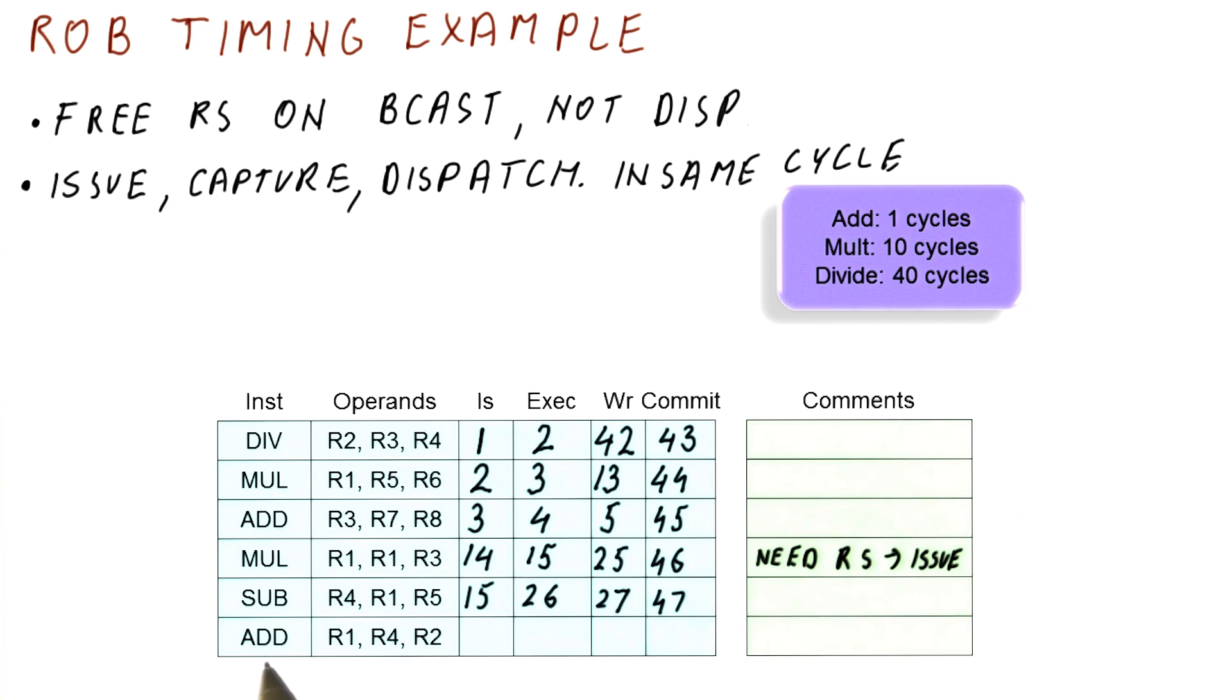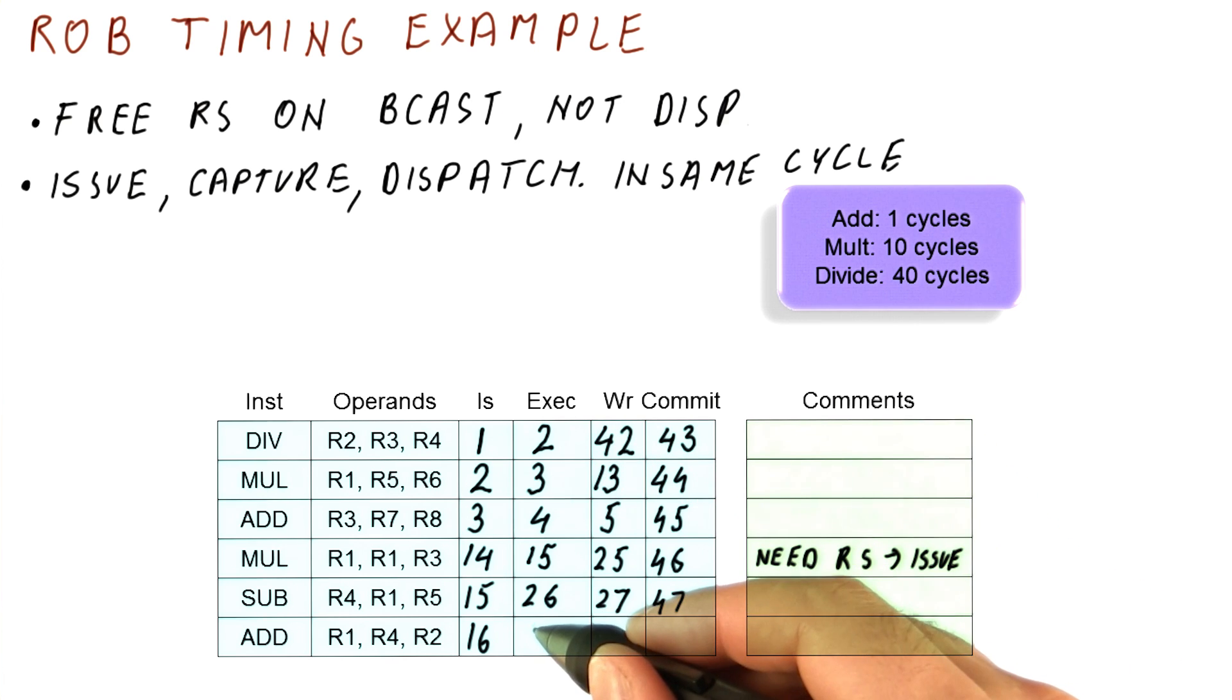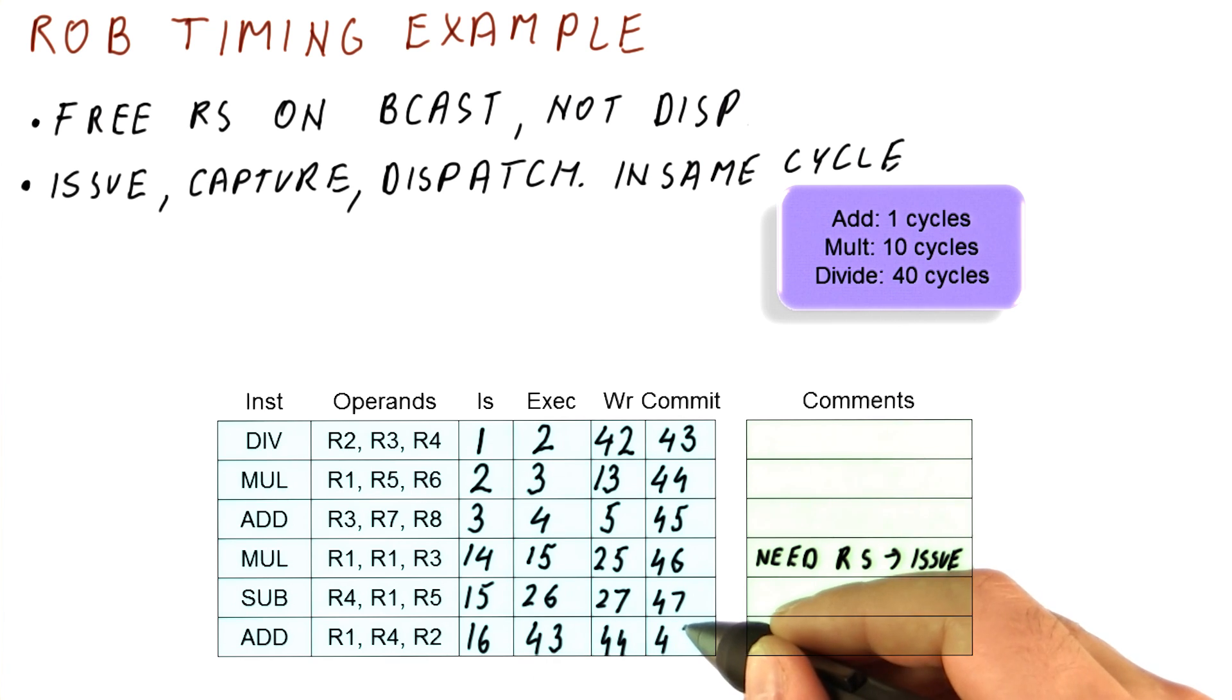And finally, let's look at this add here. It's going to issue in cycle 16. Execution will begin when R4 and R2 are available. R4 is available in cycle 27. But R2 is available only in cycle 42. So we will dispatch in cycle 42 and begin executing in cycle 43. We will write our result one cycle after that. And we will commit in cycle 48.